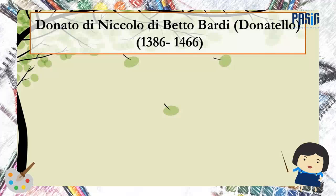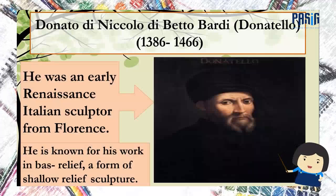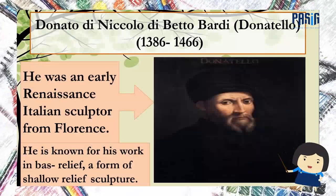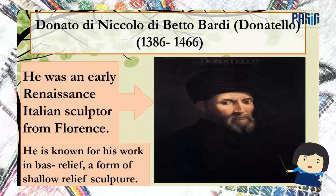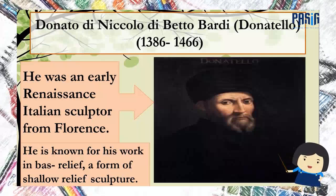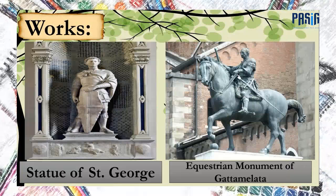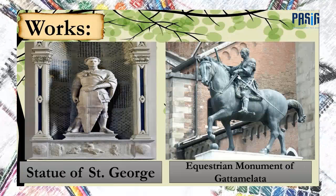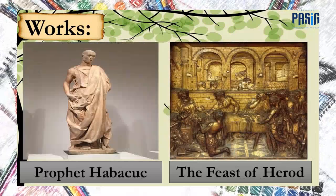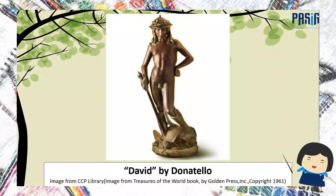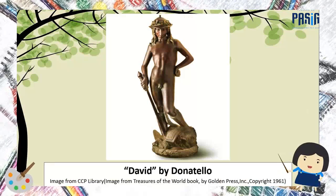Donato di Niccolò di Betto Bardi, most commonly known as Donatello, was one of the great Italian artists of the period. He was an early Renaissance Italian sculptor from Florence. He is known for his work in bas-relief, a form of shallow relief sculpture. His artworks include David, the Statue of St. George, the Equestrian Monument of Gattamelata, Prophet Habakkuk, and the Feast of Herod. Donatello's sculpture David was, at the time it was created, the first known freestanding nude statue produced since ancient times.